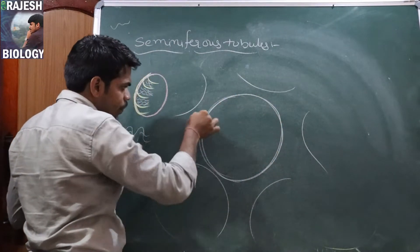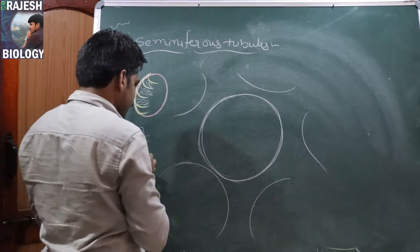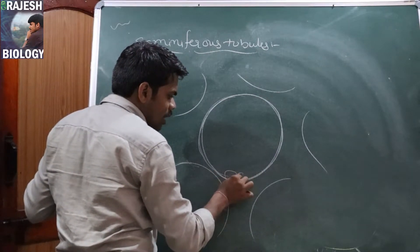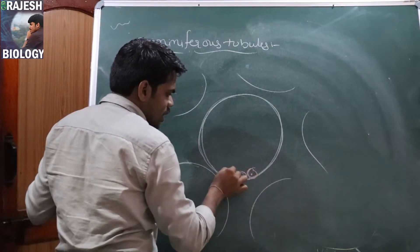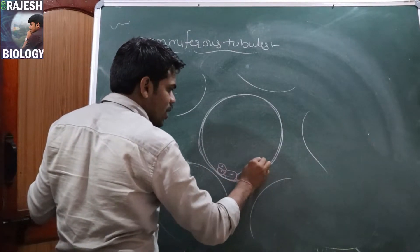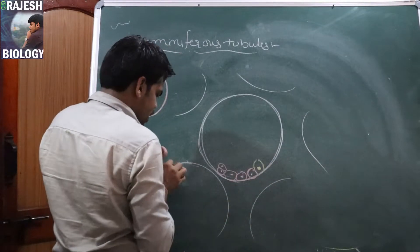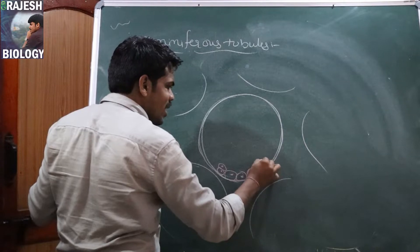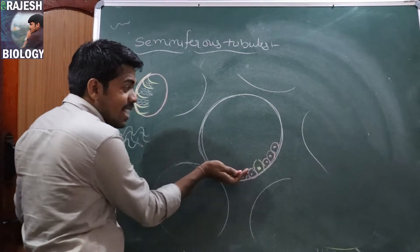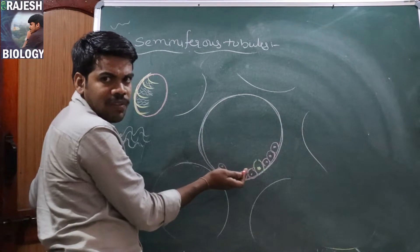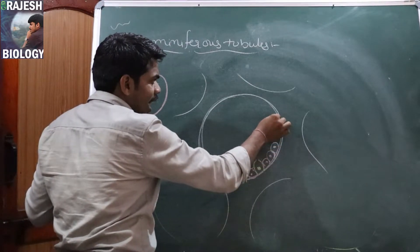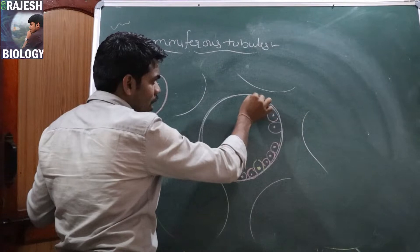Each seminiferous tubule is internally lined by two types of cells. They are spermatogonial mother cells. Between the spermatogonial mother cells there are nourishing cells called Sertoli cells. Lining means inside — if present outside we call it covering, if present inside it is lining. So seminiferous tubules are internally lined by spermatogonial mother cells.